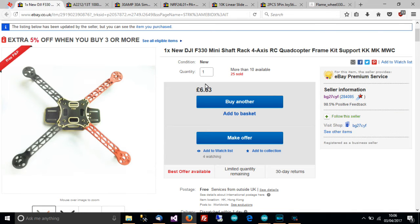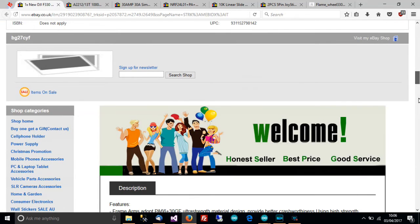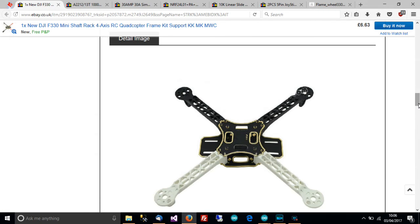So to start with the frame. Here's the frame, it cost me £6.63 from this seller here BG27CYF and you can see here DJI F330. This is what I bought. It's from Hong Kong. So there's the frame that I've bought and this has arrived actually. When I get my camera back I'll show you more videos about this.